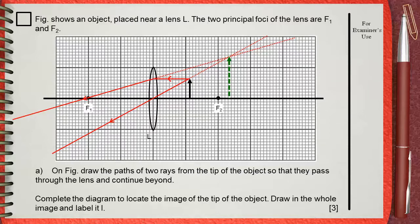And this green dotted arrow shows our image and it's labeled I. This is the complete ray diagram for this case.